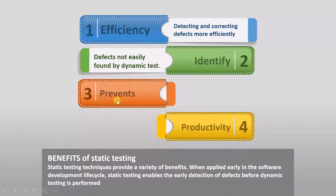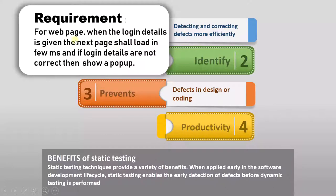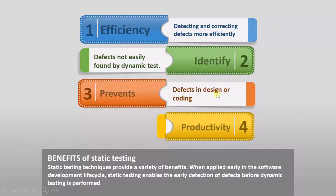The third point is prevention of defects. When we perform static testing, we prevent defects from passing to the design phase or the coding phase, because we find defects early. For example, if the customer gives a requirement that for a web page, when login details are provided the next page shall load in a few milliseconds, and if login details are incorrect then show a popup — and this goes directly to implementation, people will ask: how long to load the next page, what is the content of the next page, and what is the popup content? Whereas if you perform static testing in the requirement phase itself, you clarify all these doubts and prevent such defects from reaching the design or coding phase.